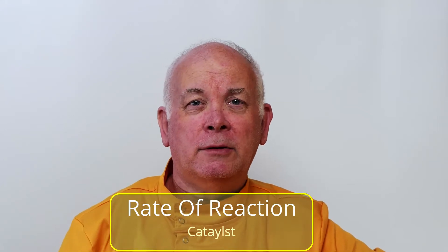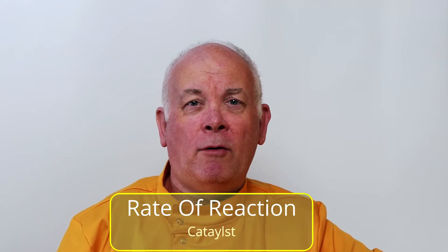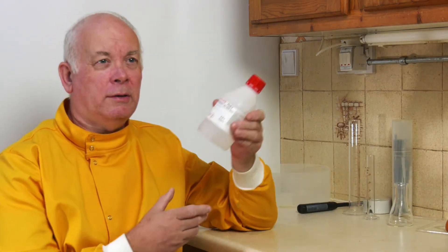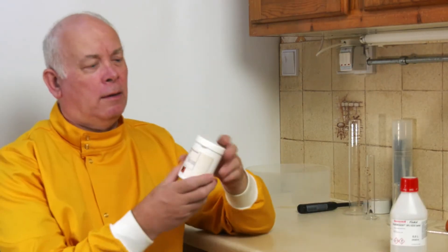Rates of reactions - one of the things we can look at is the effect of a catalyst. So in this experiment we are going to take some hydrogen peroxide and we're going to have a look at the effect of adding manganese dioxide as a catalyst and see how it affects the rate of the reaction.